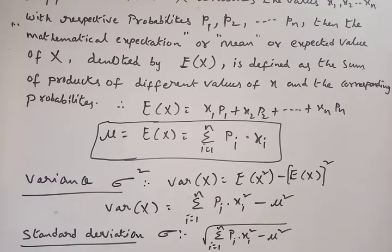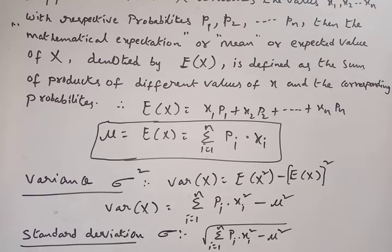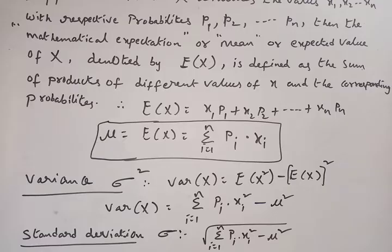So these are the leftover topics from Unit 1. We discussed random variables, types of random variables (discrete and continuous), probability mass function, probability density function, and mathematical expectation. Now we will solve a few problems on random variables, probability mass function, probability density function, and continuous random variables to complete this unit.